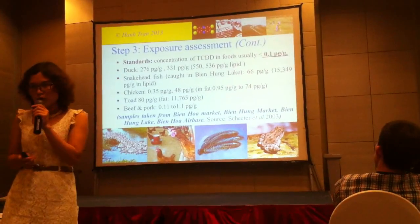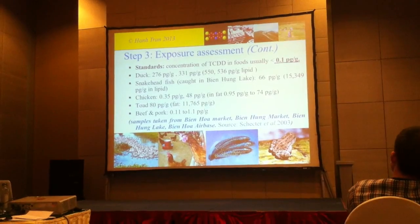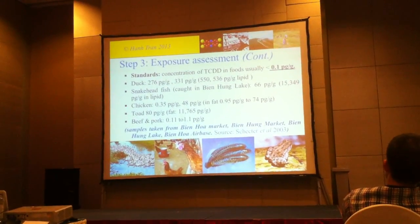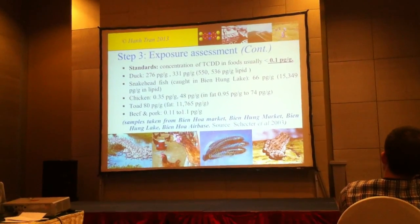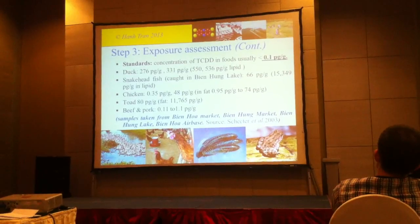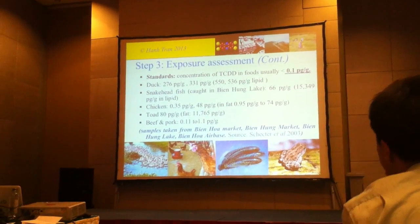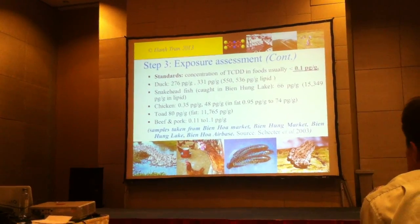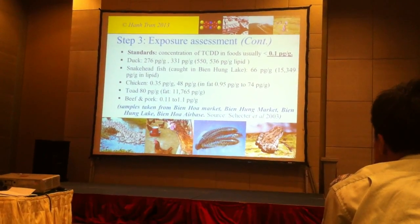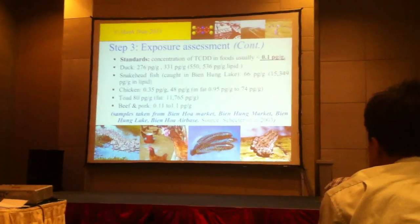For the level of dioxin in foods, international standards depend on the country and the food type. Usually the level of TCDD in food should be less than 0.1 picograms per gram. A study by Schecter et al. (2003) took only 16 samples in Bien Hoa, and the levels of dioxin in food — at the base, in the market, and in Bien Hung Lake — were at very high levels, exceeding those standards by nearly 3,000 times.